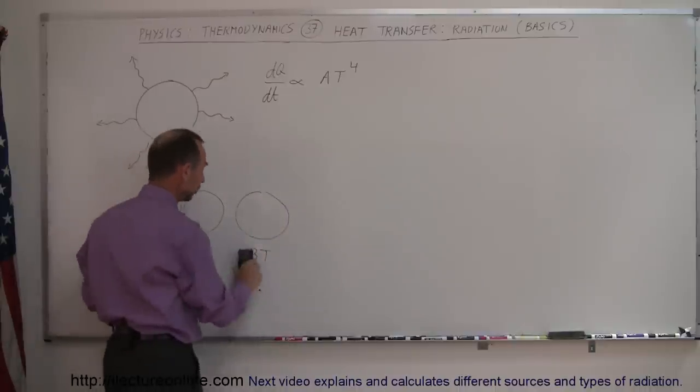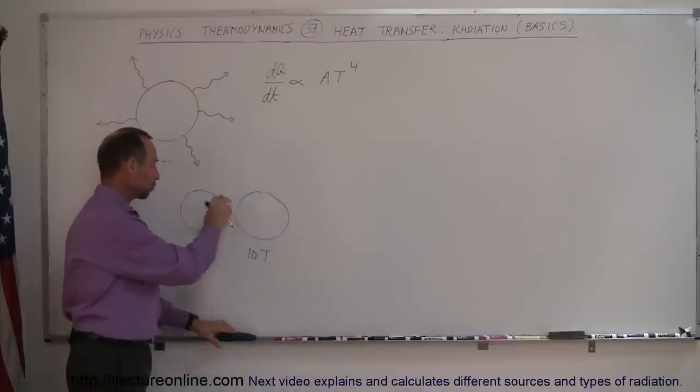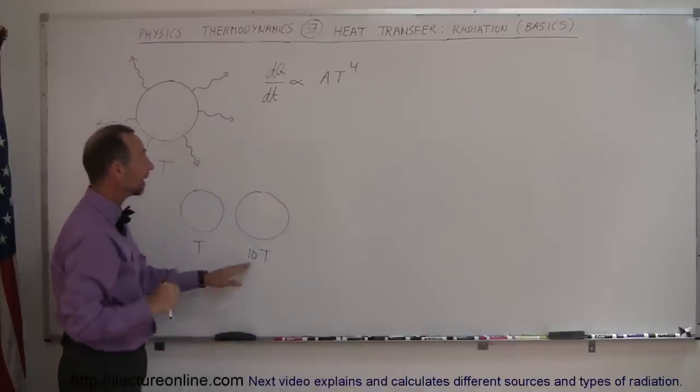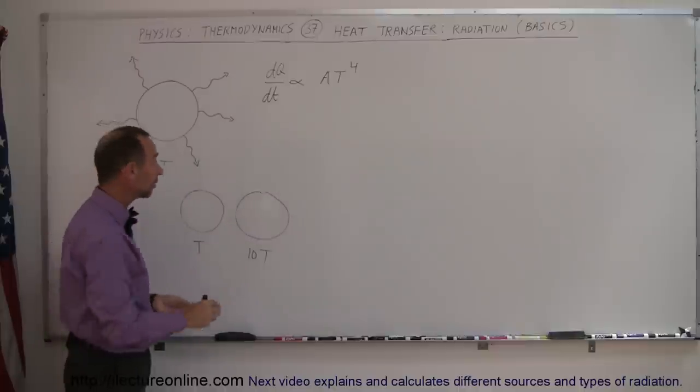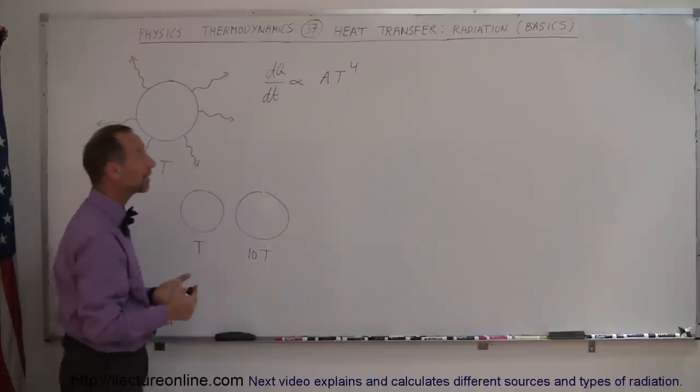And again, to finish the example, let's say that one object is at 10 times the temperature as the other one. You can see that 10 to the fourth power is 10,000. Then this object will radiate out 10,000 times as much heat as this one, simply by it being 10 times as hot.